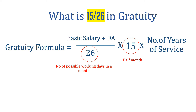Whenever we divide the basic salary plus dearness allowances by 26, we get the per day salary of that employee. When we multiply that per day salary by 15, we get the half-month salary. And when we multiply the half-month salary by the total number of years of service, we get the actual Gratuity amount that should be paid to that employee.